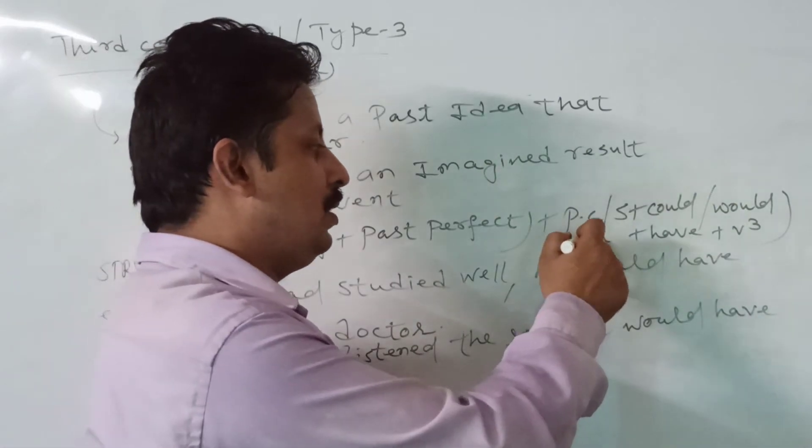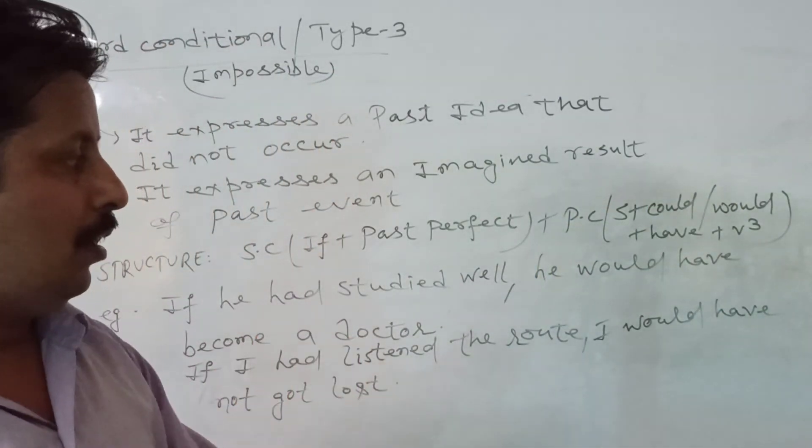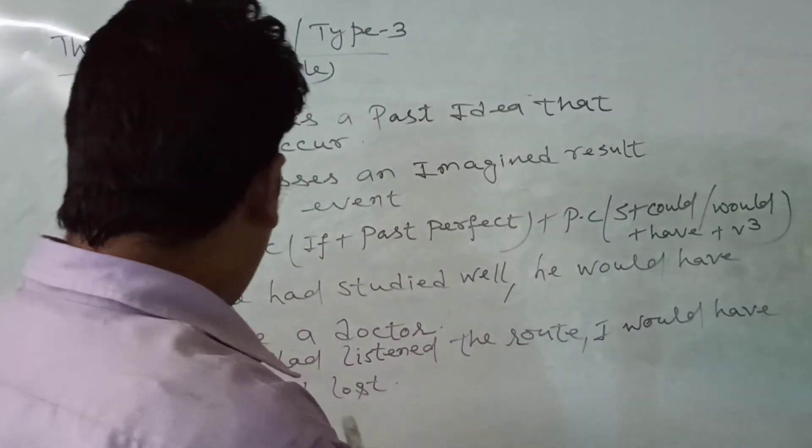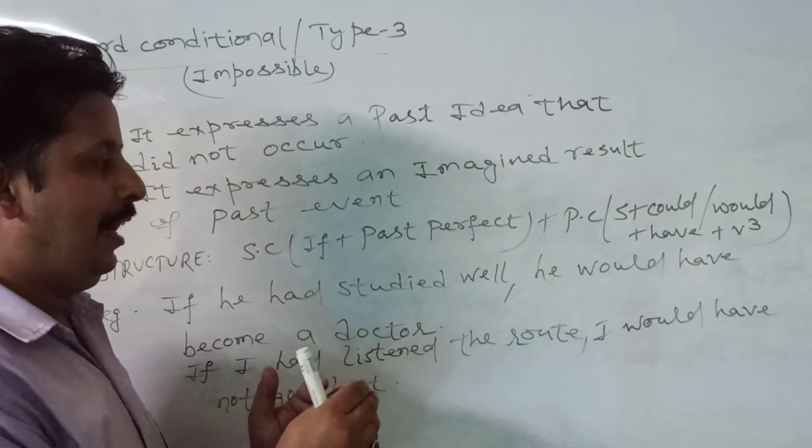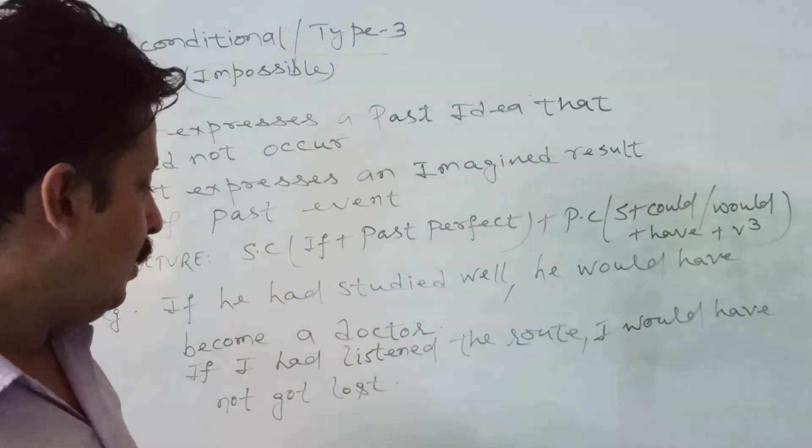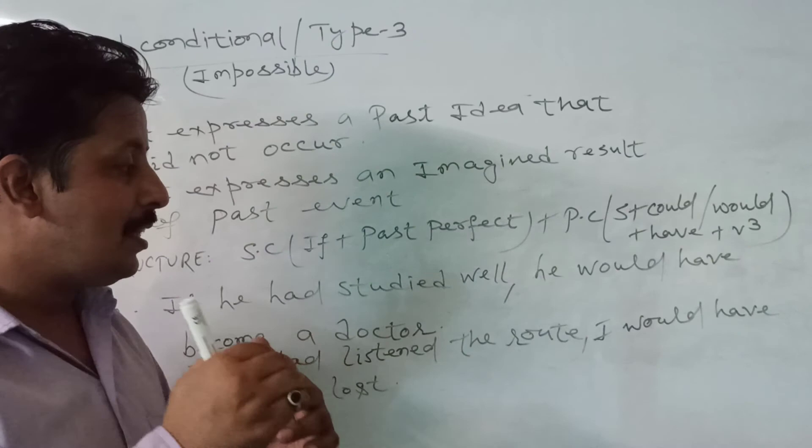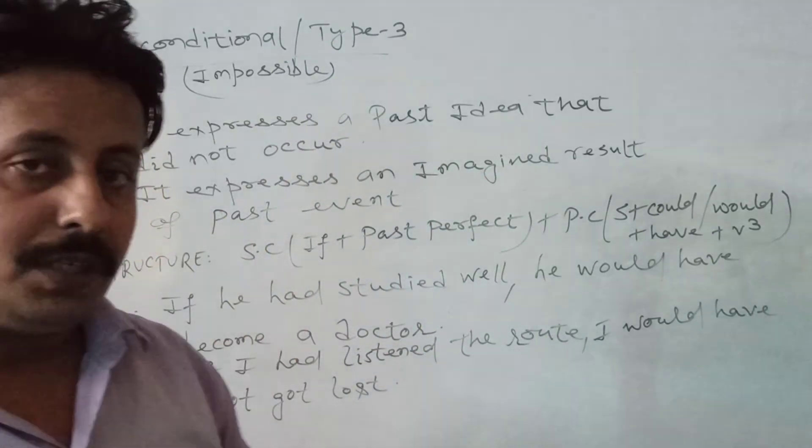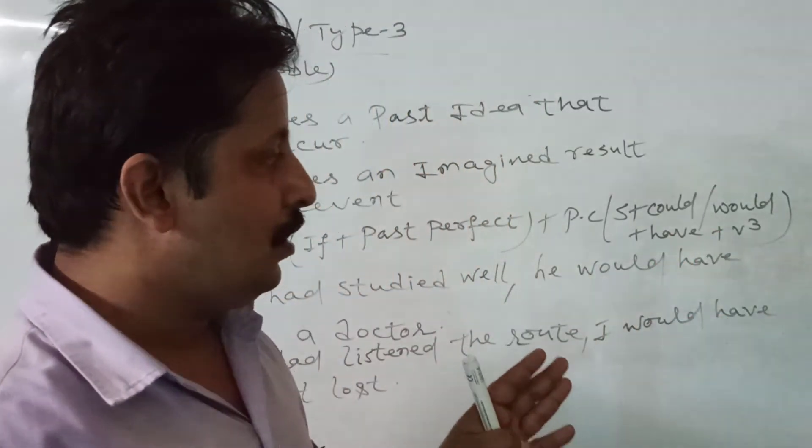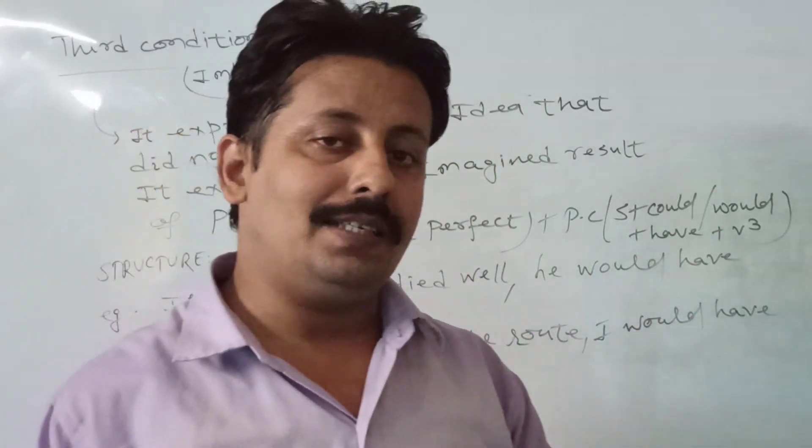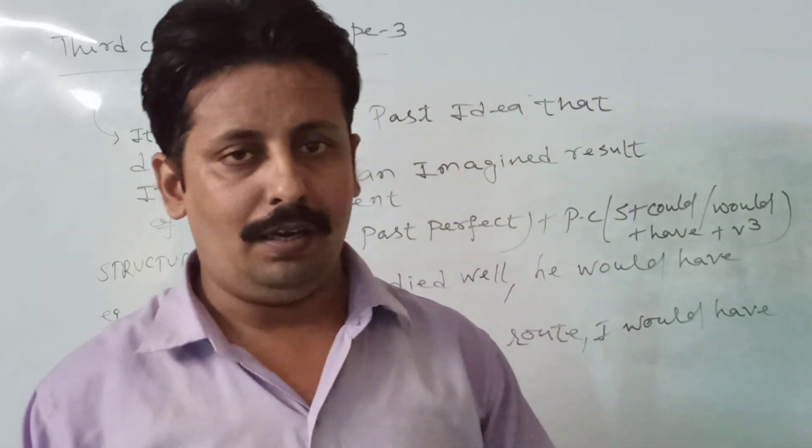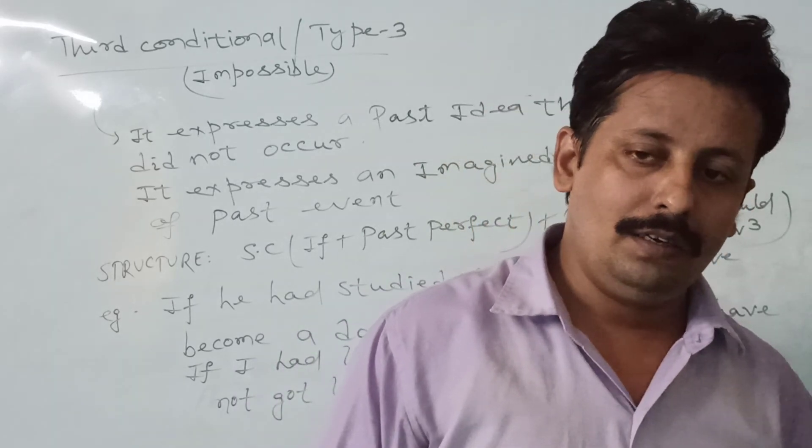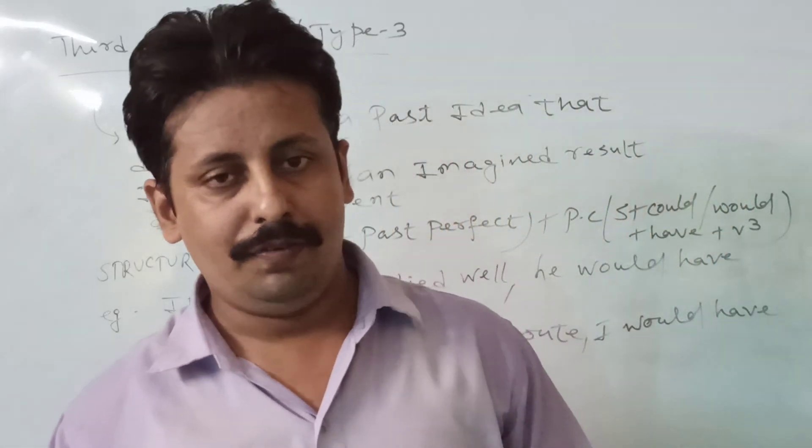For example, you can see here: If he had studied well, he would have become a doctor. If I had listened to the advice, I would have not got lost. This condition shows the past event. So in total, we discussed about four kinds of conditionals. That's enough, thank you.